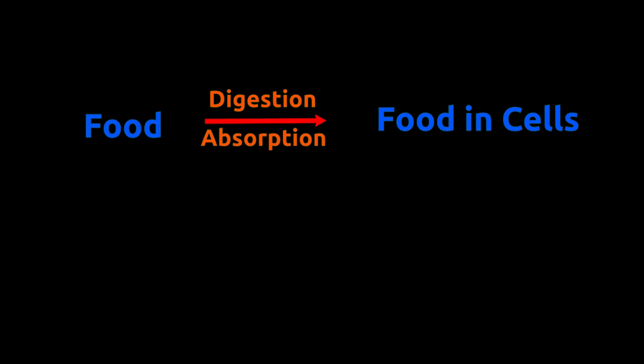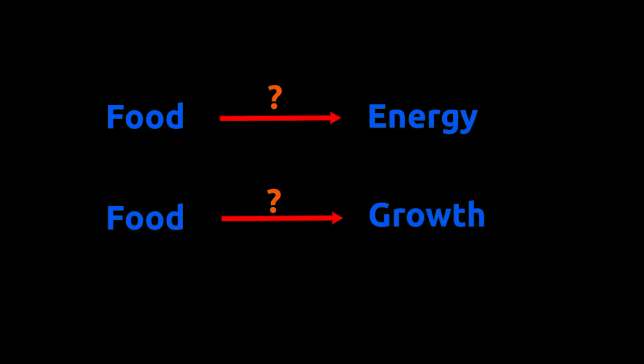Food that we eat gets digested and nutrients are absorbed and taken to the cells by our blood. At the cell, these nutrients are used for body growth and energy generation. Let's learn about the processes which are responsible for growth and energy generation.